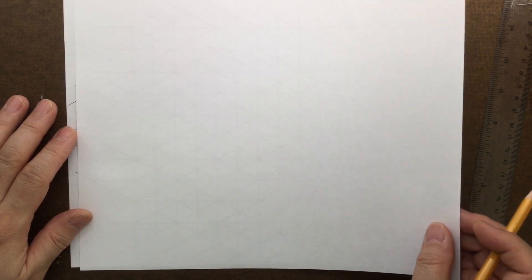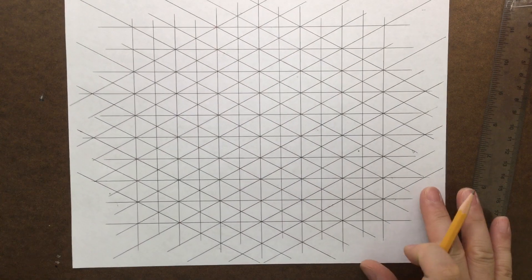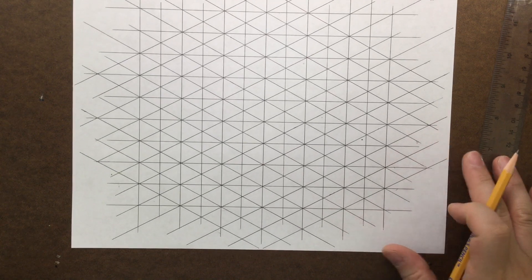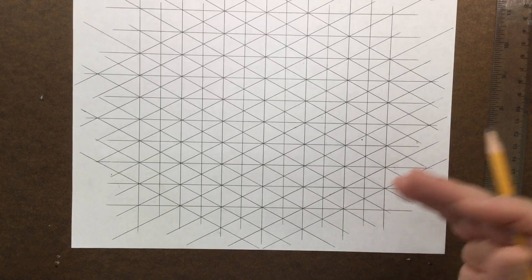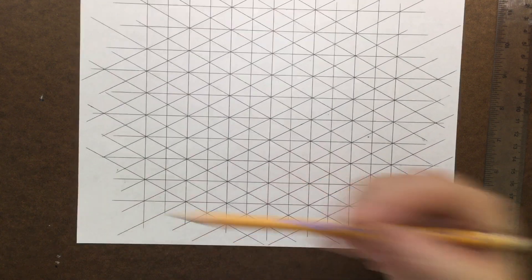So we're gonna use isometric grid. This is a pre-made. In other lessons, we talked about how to create this. So 30 degree.